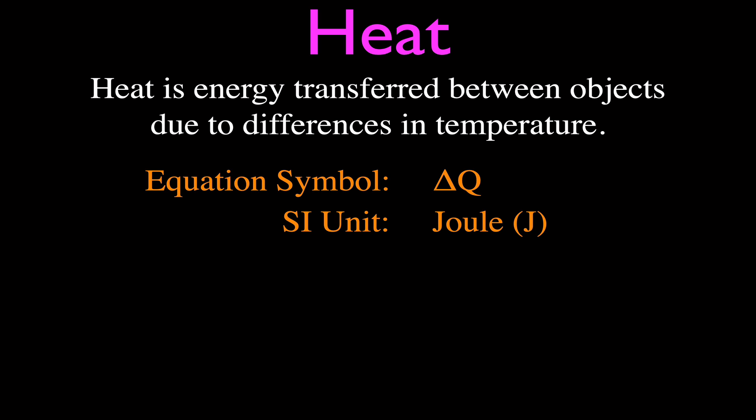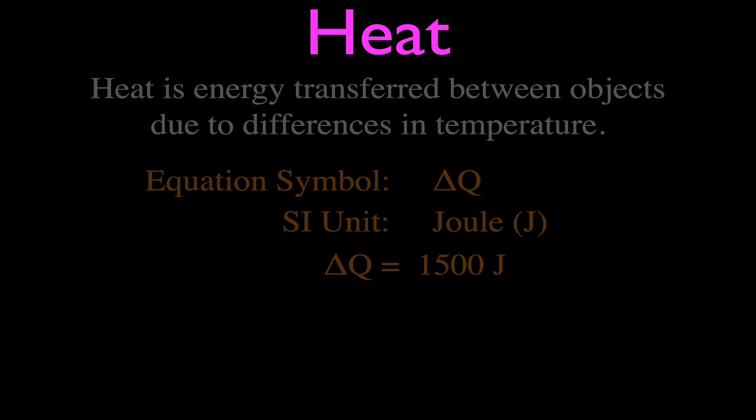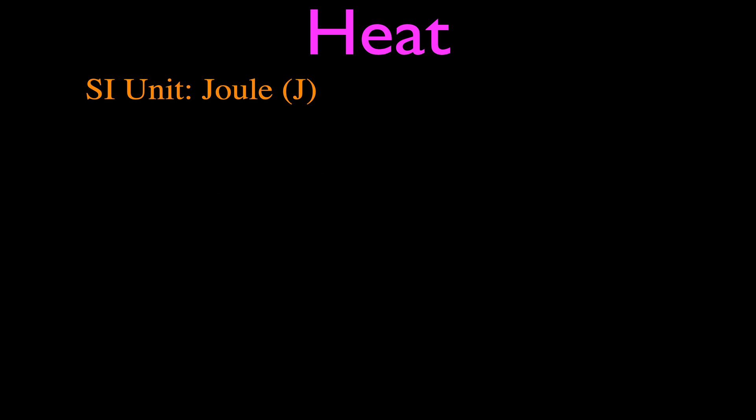The SI metric unit for heat is the joule, with the abbreviation J. It's the same unit we use for energy and for work. For example, we could write ΔQ = 1500 joules, meaning something gained 1500 joules of energy.